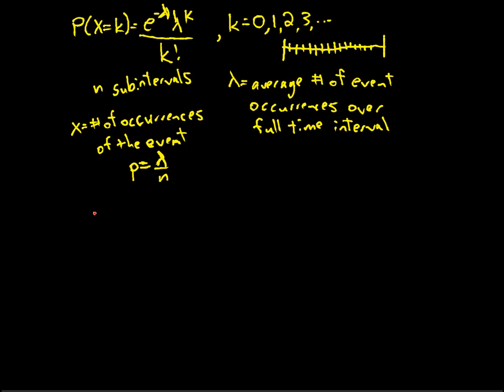Under my binomial distribution, I have the probability that X is k is approximately, since we're approximating with the binomial distribution, n choose k, 1 minus lambda over n (that's 1 minus p) to the power of n minus k times p to the k.